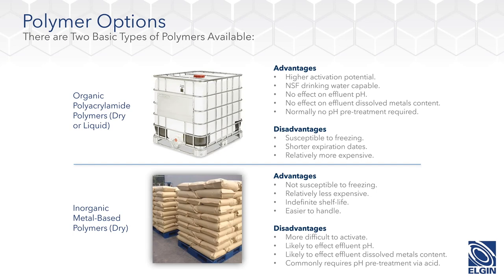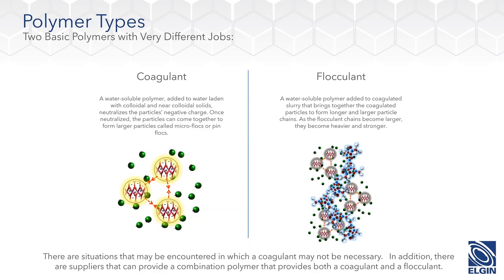There is a lot more that can be involved in the selection — the nature of the solid, the type of reactivity, the availability — that governs what you might pick. When we talk about whether we're using polyacrylamides or metal-based polymers, there are two basic polymers with two very different jobs: a coagulant and a flocculant. These two terms get used synonymously as if they're the same thing. Technically, they're not — they are very different.